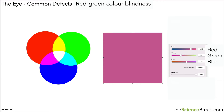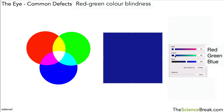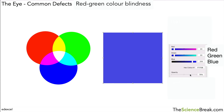Now what about red-green colour blindness? Well if we reduce the amount of red we can detect and the amount of green we can detect, you can see that we're only really going to see shades of blue. You might detect a very tiny amount of green towards the left end there, but really we only see shades of blue. And this is what happens when someone has red-green colour blindness.